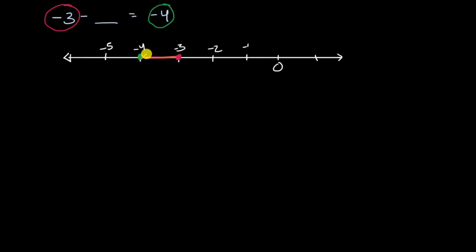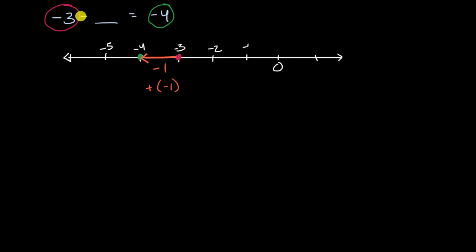One step in the leftward direction — you could either view that as subtracting one, or you could view that as adding a negative one. Since we're already subtracting here, the simplest thing is to say this is the same thing as subtracting one. And we're done. Negative three minus one is indeed equal to negative four.